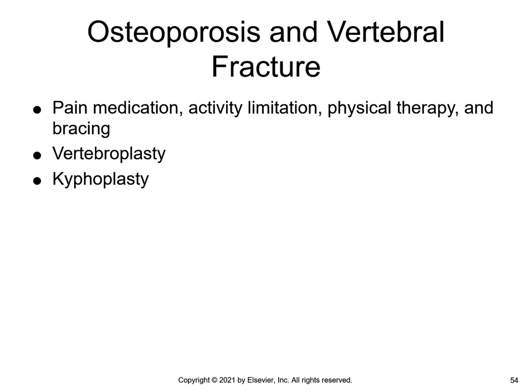Vertebral compression fractures commonly occur in patients with osteoporosis. These are often treated with pain medication, activity limitation, physical therapy, and bracing. Two new minimally invasive spine procedures are viable treatments for those who do not respond to conservative therapies. A vertebroplasty involves the percutaneous injection of cement directly into the osteoporotic spinal area under fluoroscopy, which can stabilize the bone and help reduce or eliminate pain. A kyphoplasty consists of the percutaneous insertion of an inflatable device into the fractured vertebral body under fluoroscopy; the inflated device alleviates the end plates and restores the vertebral body toward its original height.